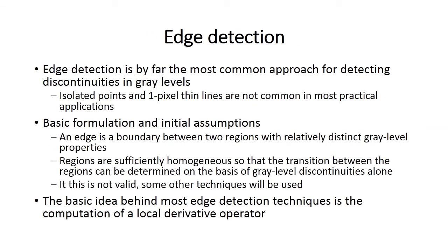Edge detection is by far the most common approach for detecting discontinuities in gray levels ranging from 0 to 255. Isolated points and one-pixel-thin lines are not common in most practical applications such as satellite images, biomedical zoom images, etc. An edge is a boundary between two regions with relatively distinct gray level properties. The regions are sufficiently homogeneous so that the transition can be determined on the basis of gray level discontinuities alone. If this is not valid, other techniques will be used.